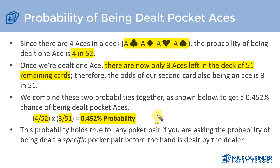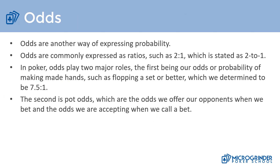Now let's talk about odds. Odds are simply another way of expressing a probability, and they're commonly referred to as ratios — such as two to one. In gambling, things are commonly mentioned in odds rather than as a probability percentage, for example two to one.